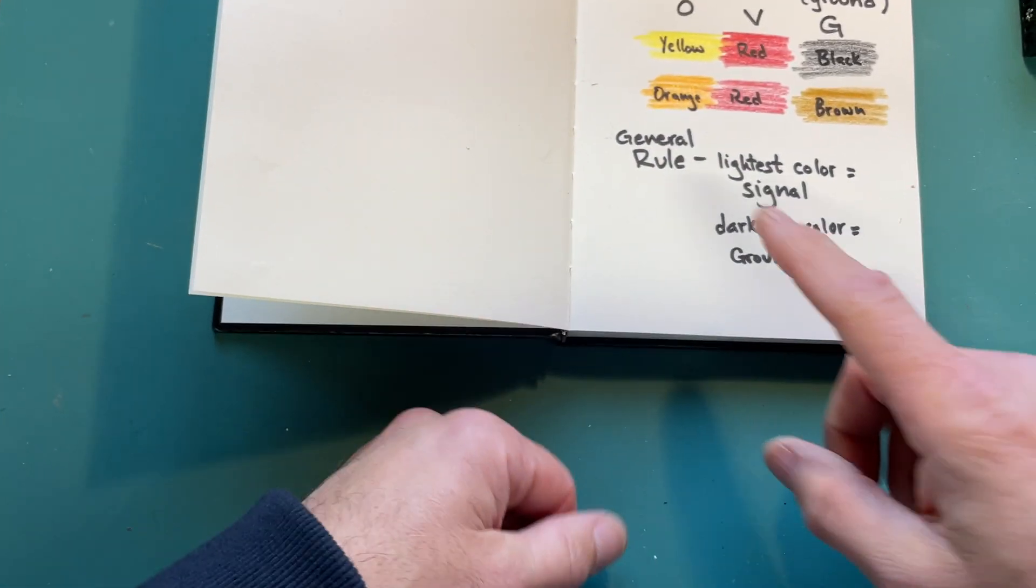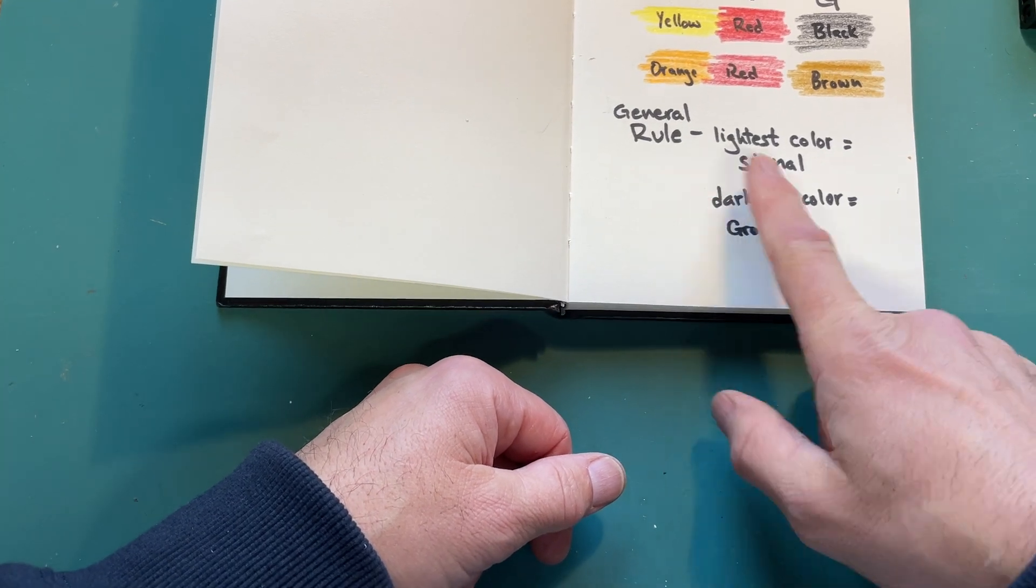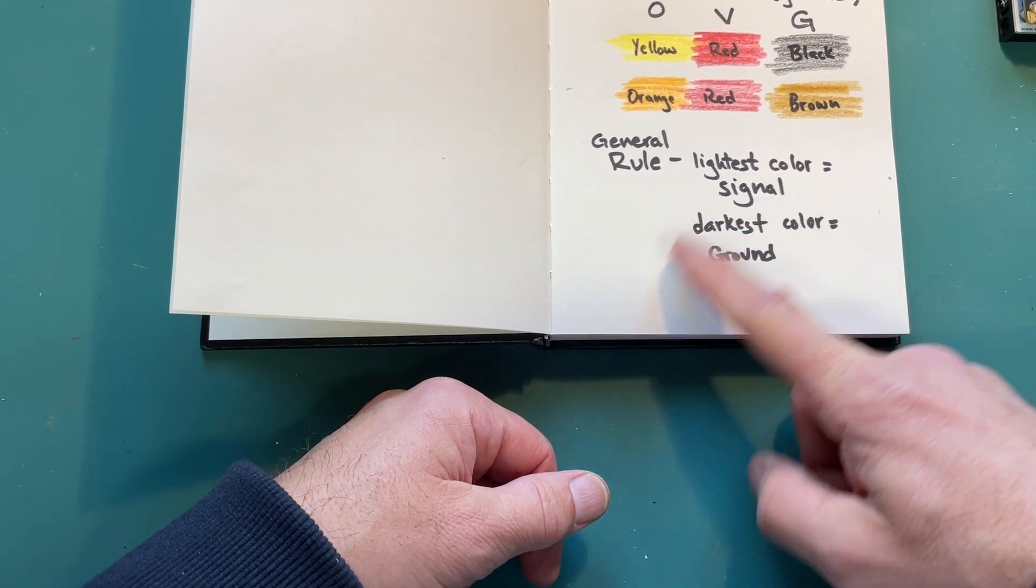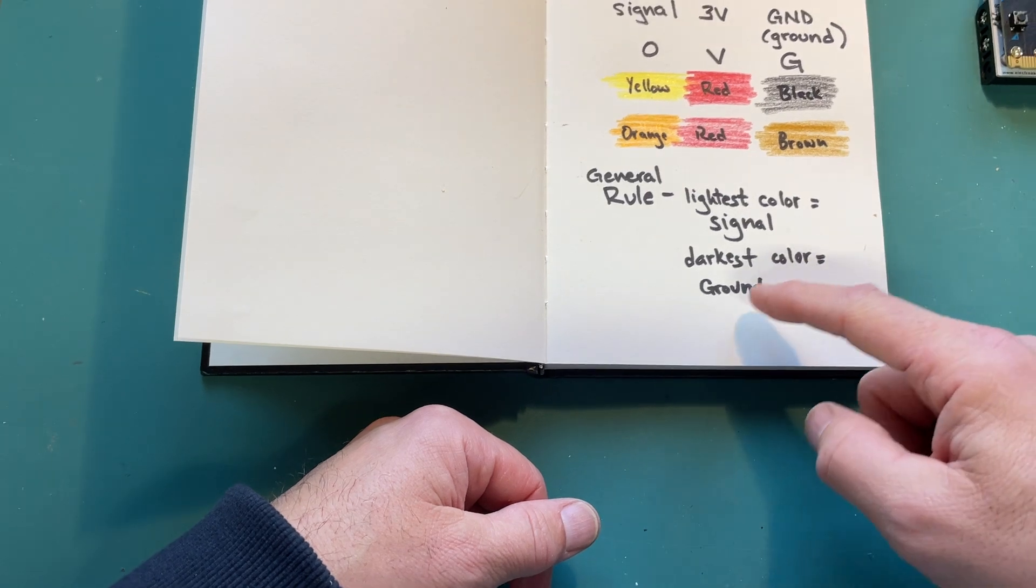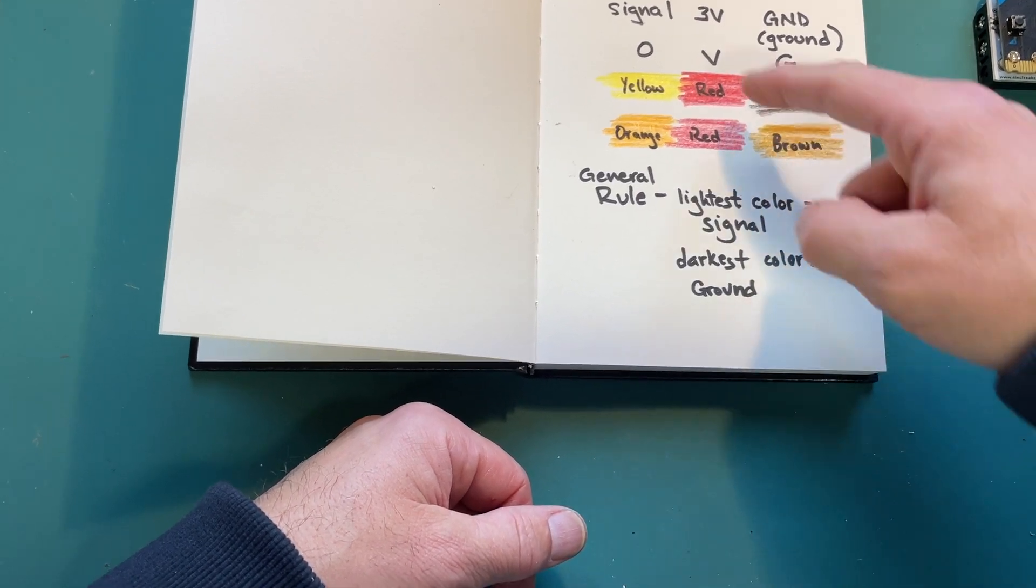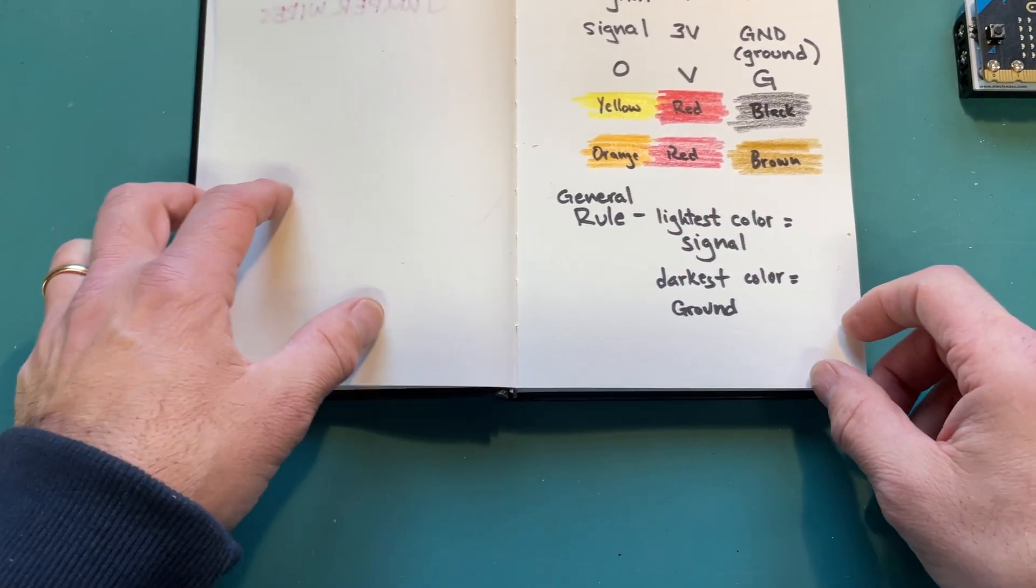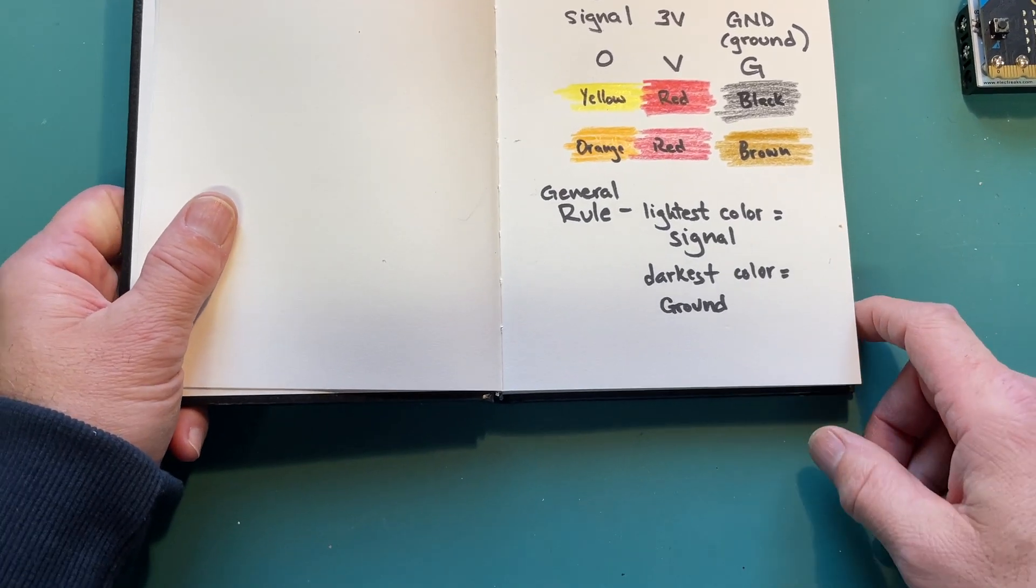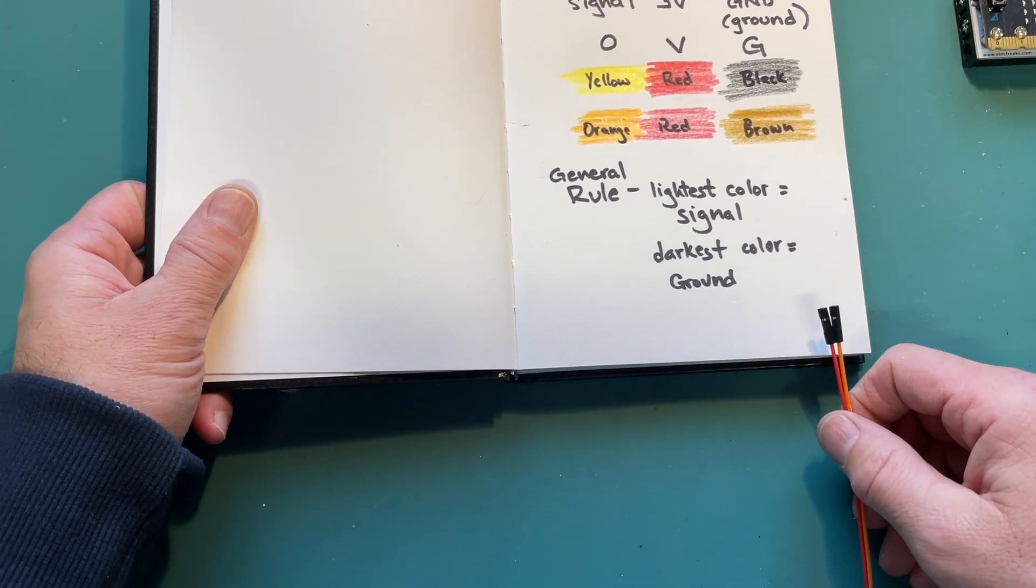The thing to remember basically is this general rule: the lightest color is always the signal wire, the darkest color is always the ground wire, and red is in the middle. That's the voltage wire. It's pretty universal.